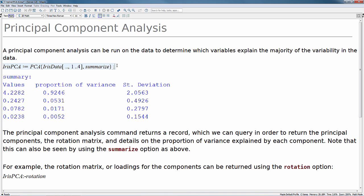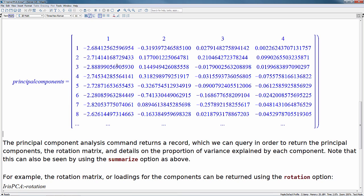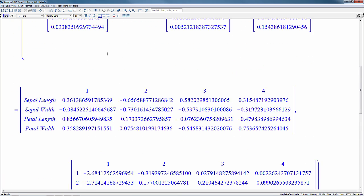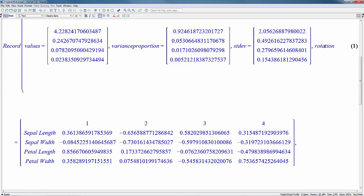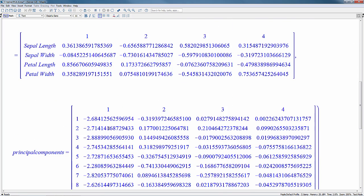Another important aspect of the PCA that we run inside of Maple is it actually returns a record. This record can be used to interrogate and get these standard values, the proportion of variance, the standard deviation, as well as the rotation matrix and the principal components from the PCA analysis.